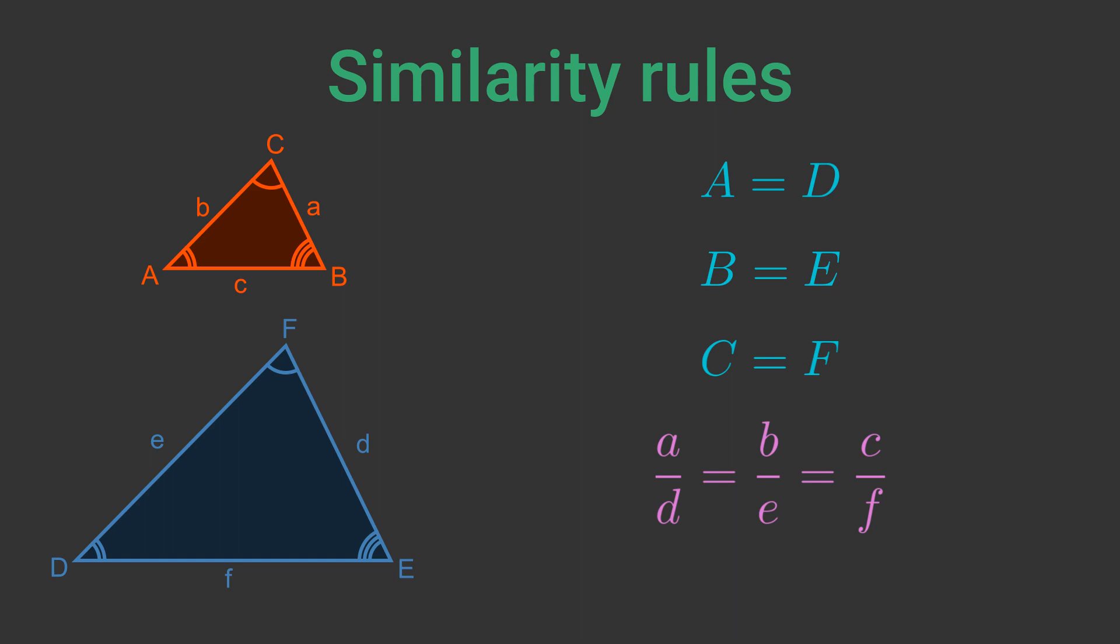The AA rule says that if the triangles have two angles the same then the other angle must be the same and all the sides must be proportionate. In other words if these two equations are true then all four equations are true. The SSS rule says that if all the sides are proportionate then all the angles must be the same. In other words if this equation is true then all four equations are true. We will prove these rules in this video.